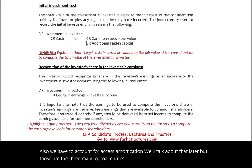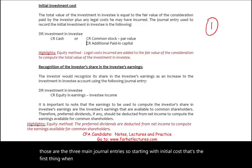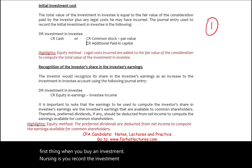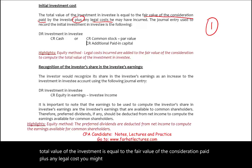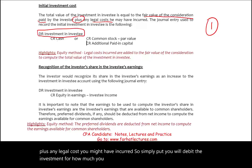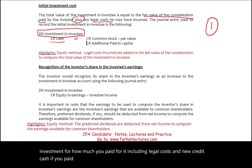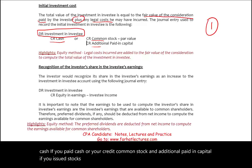Starting with initial costs: when you buy an investment, the first thing is to record it on the books. The total value of the investment equals the fair value of the consideration paid plus any legal costs incurred. You debit the investment for how much you paid, including legal costs, and credit cash if you paid cash — or credit common stock and additional paid-in capital if you issued stock to buy the company.